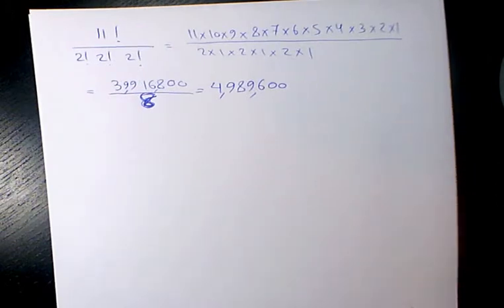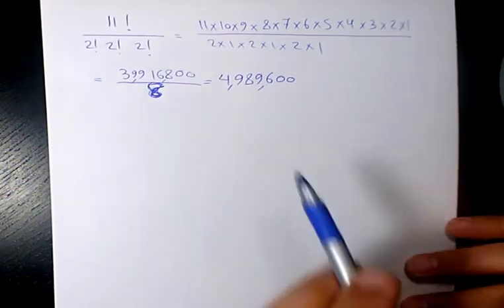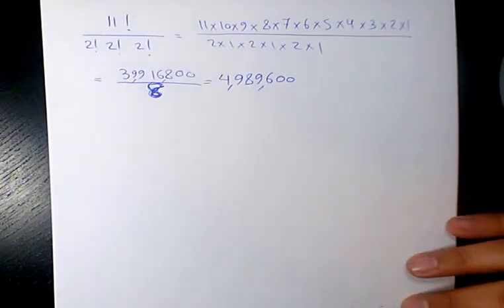So it's going to be four million, nine hundred eighty-nine thousand, six hundred. This is going to be the final answer. That's going to be how many ways we can arrange these letters for MATHEMATICS.